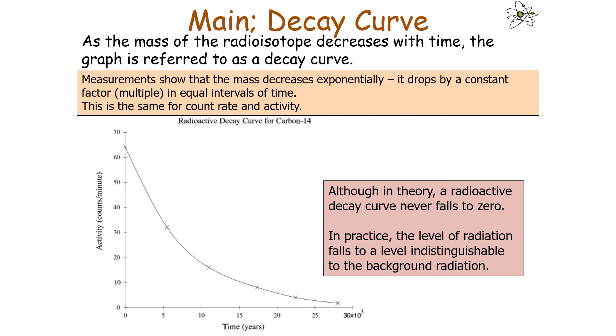In theory, a radioactive decay curve never falls to zero, but in practice the level of radiation falls to a level indistinguishable from that of the background.